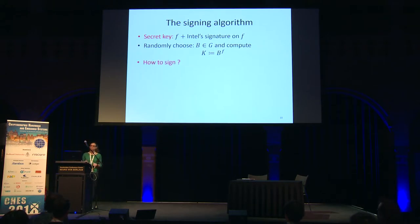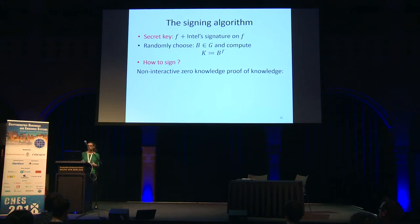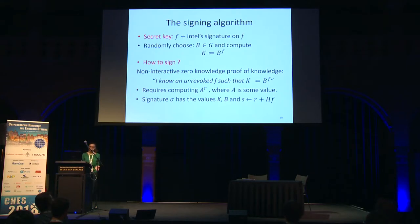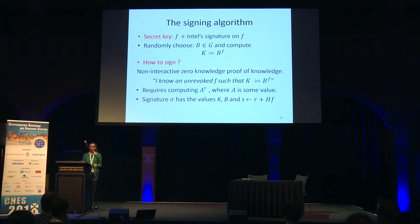How does the platform sign? To ensure unlinkability, the platform uses a non-interactive zero-knowledge proof of knowledge, proving that it knows some unrevoked f such that k = B^f. During the protocol, this requires computing an exponentiation: some value A raised to r, where r is a random nonce from Z_p. At the end of signing, the output signature contains k and B (which are public), as well as a value s equal to r + h·f, where h is a hash of public values and f is part of the secret key.